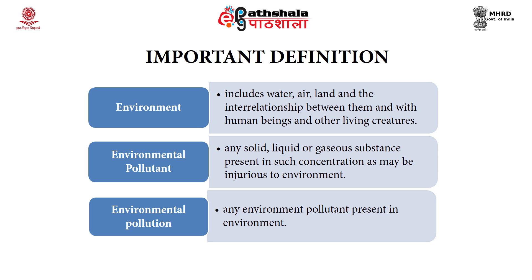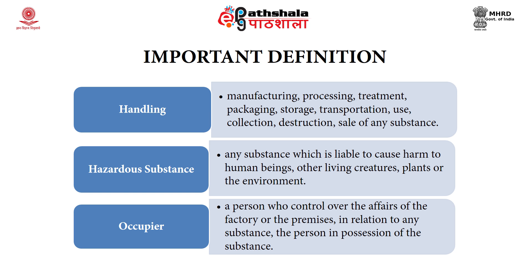There are certain important definitions laid down in Section 2 of the Environment Protection Act. As per Section 2(a), environment includes water, air, land and the interrelationship between them and with human beings and other living creatures. Section 2(b) defines environmental pollutant as any solid, liquid or gaseous substance present in such concentration as may be injurious to the environment. As per Section 2(c), environmental pollution means any environmental pollutant present in the environment. As per Section 2(d), handling means manufacturing, processing, treatment, packaging, storage, transportation, use, collection, destruction and sale of any substance.